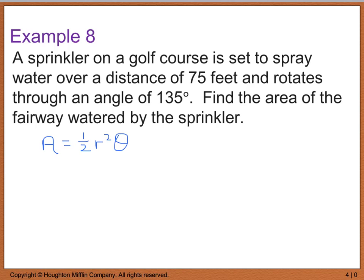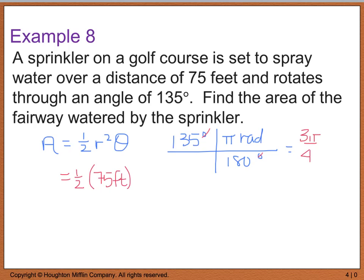So, area of a sector, because it's not a full 360 degree circle, is going to be given by 1 half R squared times theta. Theta is measured in radians. So, I have to take my 135 degrees, convert it to radians by going pi radians for every 180 degrees. My degrees are going to cancel, and I'm left with 3 pi over 4 radians.